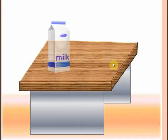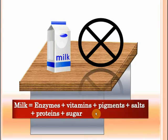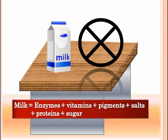On the other hand, look at milk. Is milk a pure substance? Scientists have analyzed milk and using different processes like filtration, crystallization, and many other processes, they have concluded that milk is not a pure substance. In fact, milk contains enzymes, vitamins, pigments, salts, proteins, and sugar. The point is that milk can be broken down into these substances through physical processes like boiling and pasteurization. So milk is a mixture — it's not a pure substance.